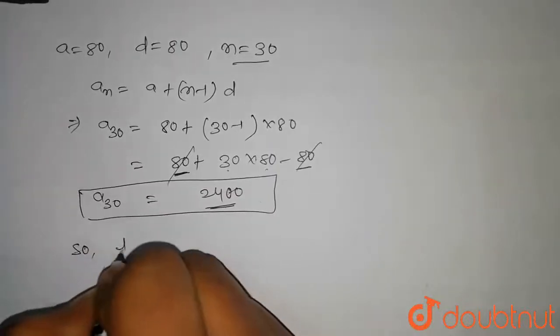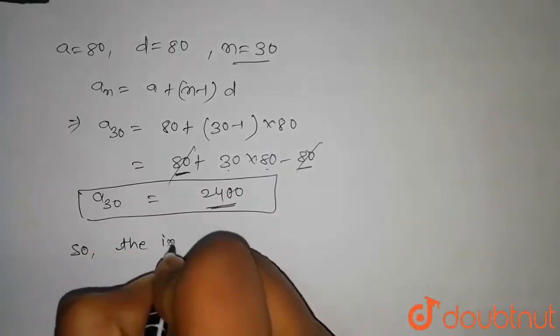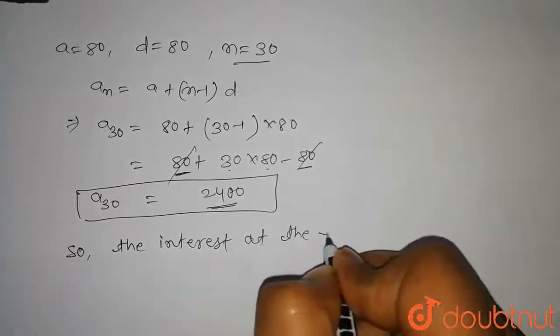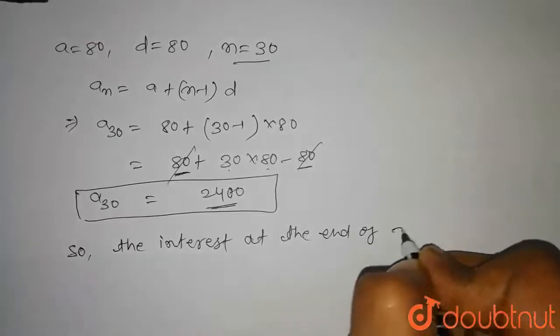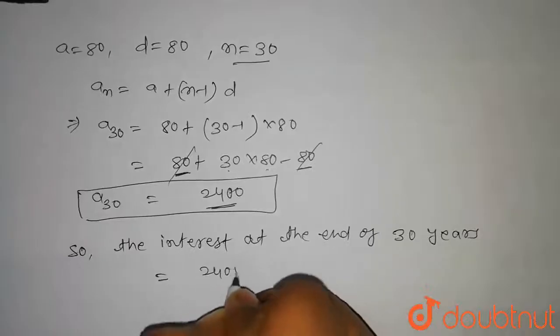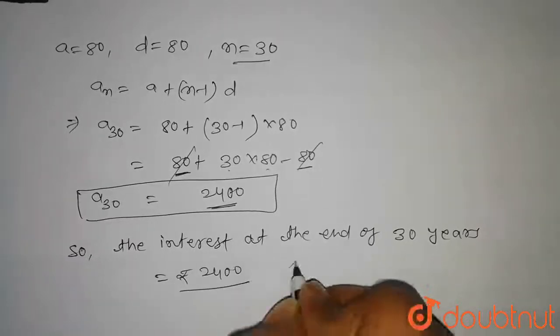We have calculated a30 equal to 2400. So the interest at the end of 30 years is equal to 2400 rupees. Thank you.